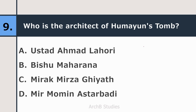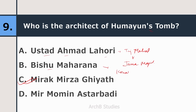Ninth question: who is the architect of Humayun's Tomb? Options: Ustad Ahmed Lahori, Vishu Maharana, Mirak Mirja Ghiyat, or Mir Mumin Astrabadi? The correct answer is Mirak Mirja Ghiyat. Ustad Ahmed Lahori is the architect of Taj Mahal and Jama Masjid. Vishu Maharana is the architect of Konark Temple, and Mir Mumin Astrabadi is the architect of Charminar.